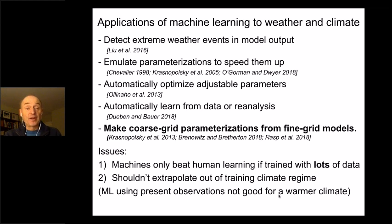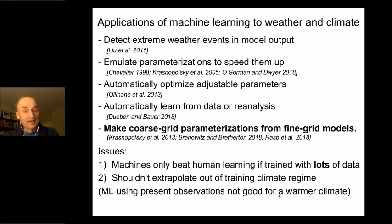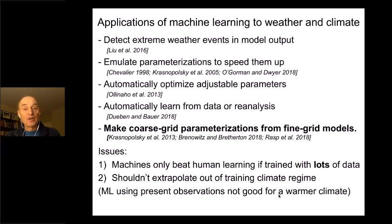Over the last few years there have been a number of attempts to apply machine learning to weather and climate, covering a variety of topics: automatic detection of extreme weather events in model output, emulation — using a machine learning scheme to take an existing parameterization for atmospheric radiation or convection and speed it up by learning its output over a large variety of cases and replacing it with a neural net approach.